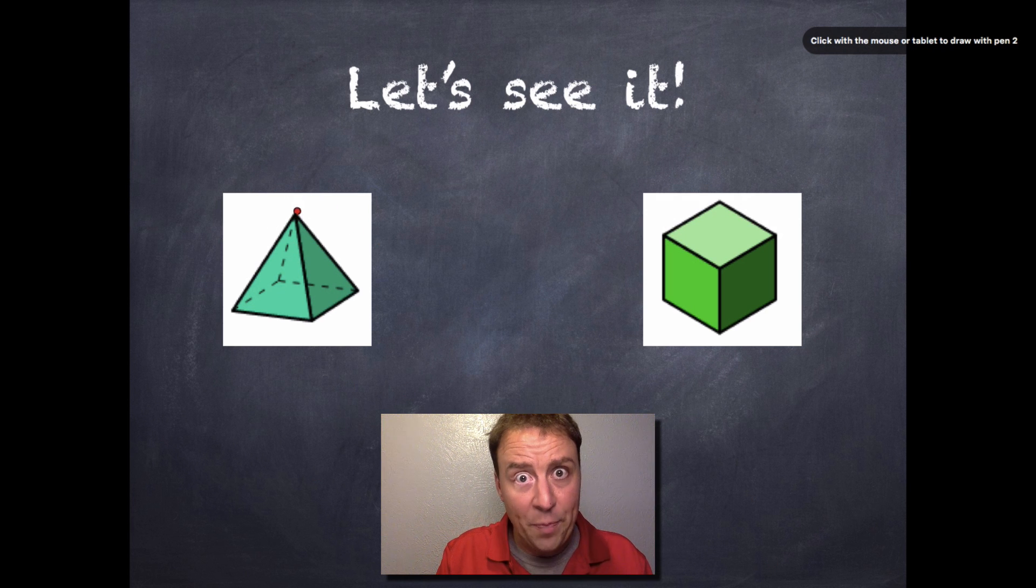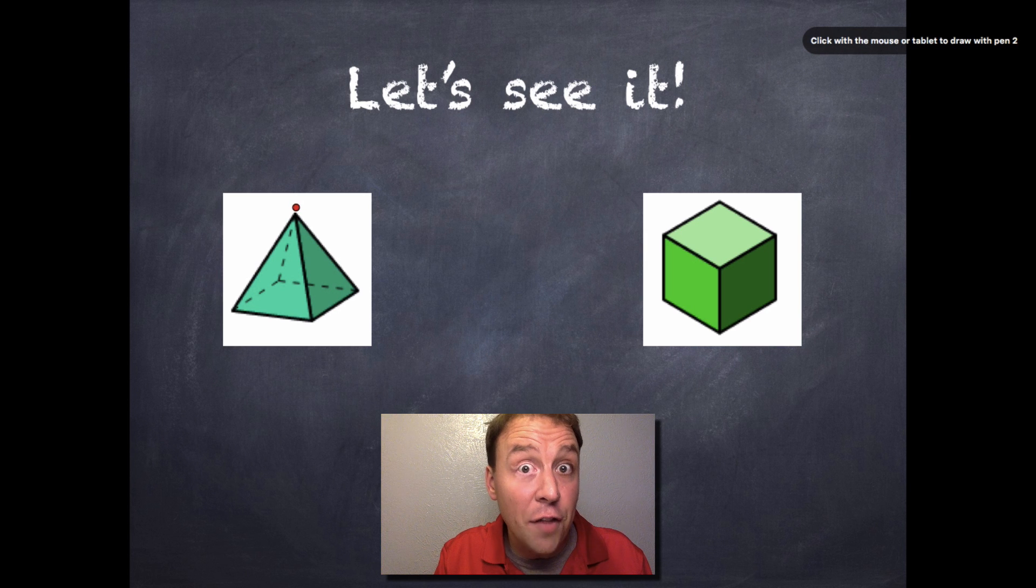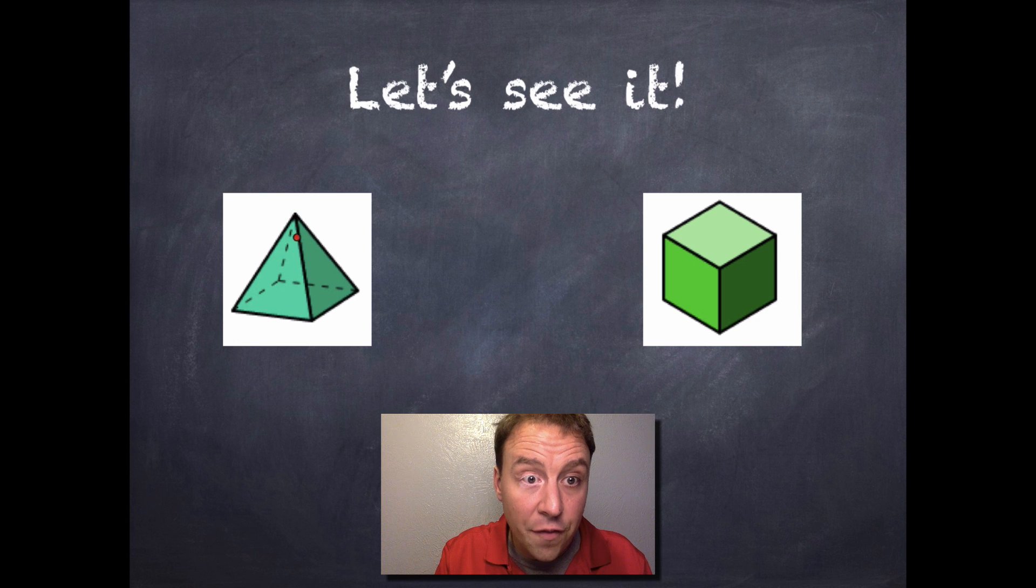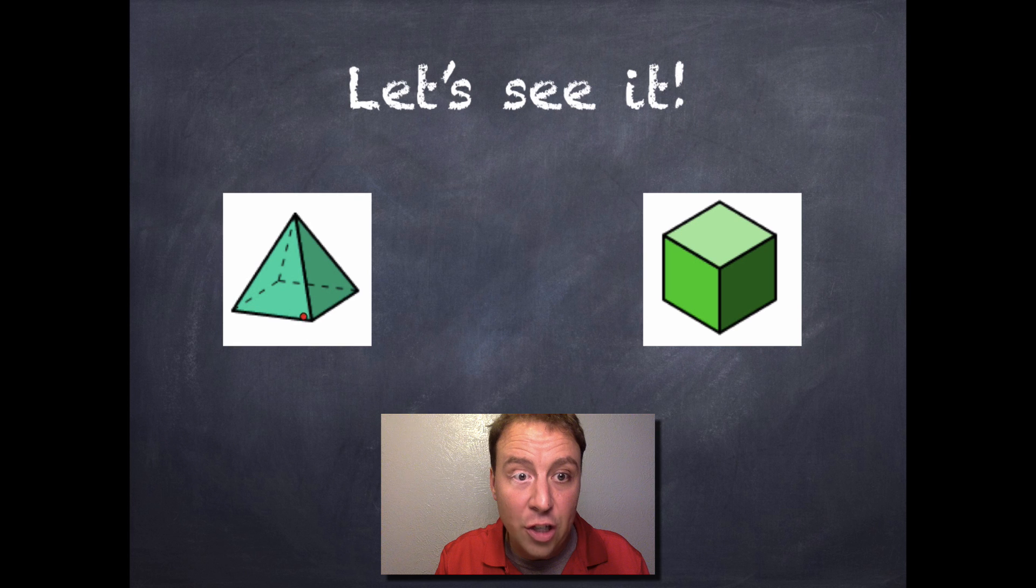Now, this is a pyramid. Faces are just the flat parts of the shape. So if you look and you're thinking of the pyramid, look, here's the flat part right here. I'm not going to scribble it in, but I want you to imagine. See this big, flat triangle here? That is face number one.